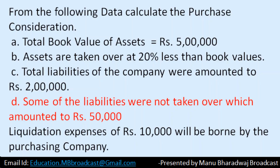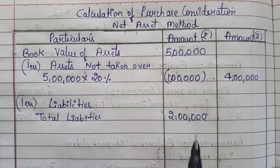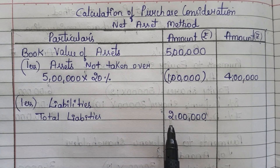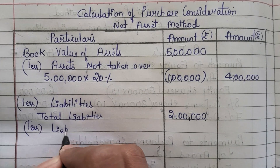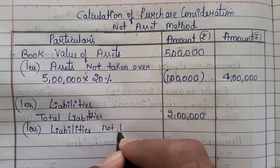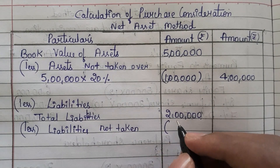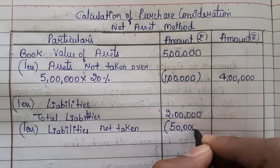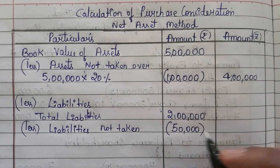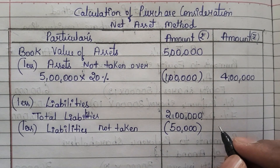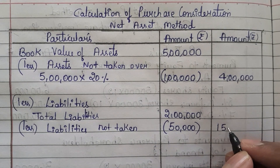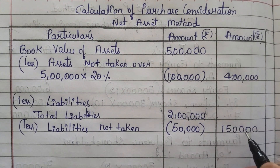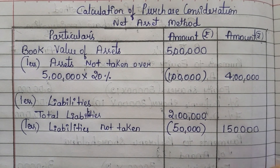Some of the liabilities were not taken over, which amounted to rupees 50,000. Out of this 2 lakh, 50,000 of liabilities they did not take over. So you subtract that — 'less: liabilities not taken' — 50,000. If you subtract 50,000 from 2 lakh you get 1 lakh 50,000, so only this much liabilities they are taking.